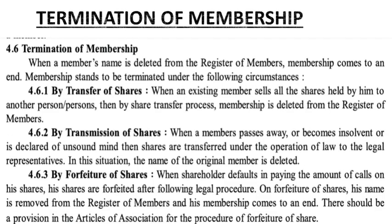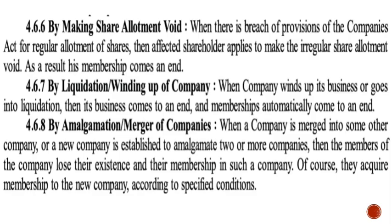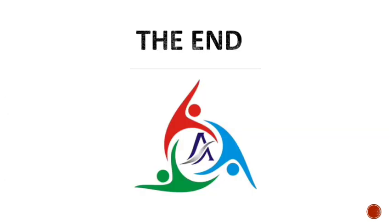So we saw a total of 8 points for when termination of membership occurs: transfer of shares, transmission of shares, forfeiture of shares, exercising lien on shares, redemption of redeemable preference shares, making share allotment void, liquidation of the company, and amalgamation of companies. That was the last topic of this chapter on termination of membership.